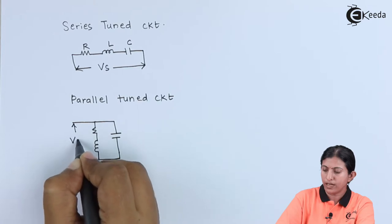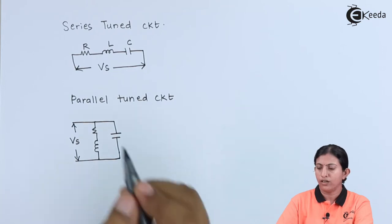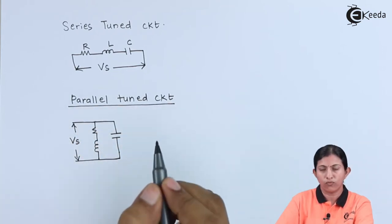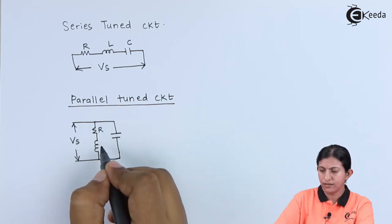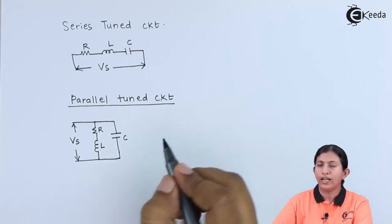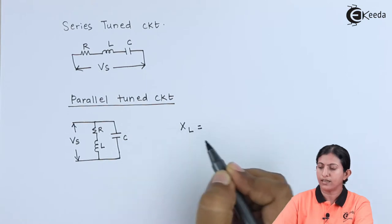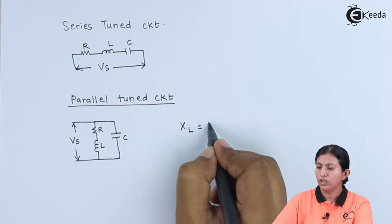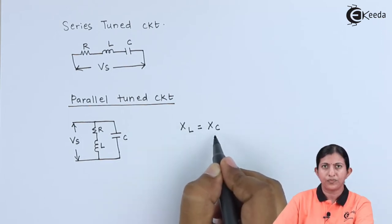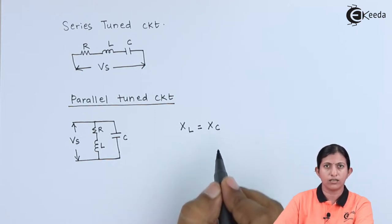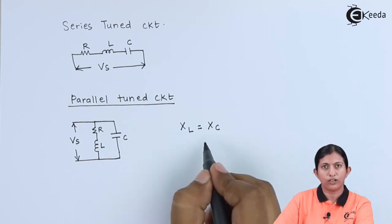To this circuit we apply the AC input signal. In a tuned amplifier we use a parallel tuned circuit, where R represents the coil resistance. At one particular frequency, XL — the inductive reactance — is equal to the capacitive reactance XC. At that resonant frequency, the maximum amplification appears.